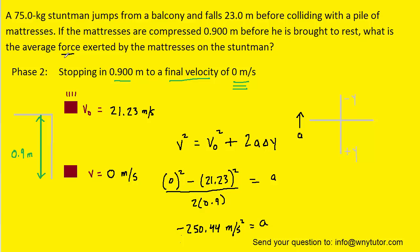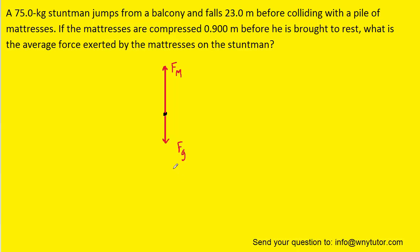Now we're only one step away from calculating the force exerted by the mattress on the stuntman. And that last part will involve a free body diagram of the stuntman as the mattresses are bringing him to rest. There are two forces acting on the man. We have the downward gravitational force Fg and then the upward force that the mattress is exerting on the stuntman.